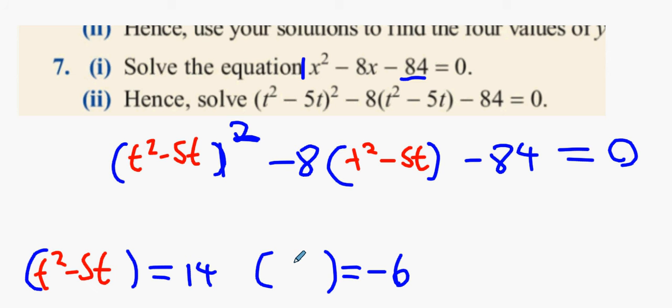I think a lot of you have already figured out all you need to do is just change the answer. Just change the x into t squared minus 5t. But I'm just explaining why that works.